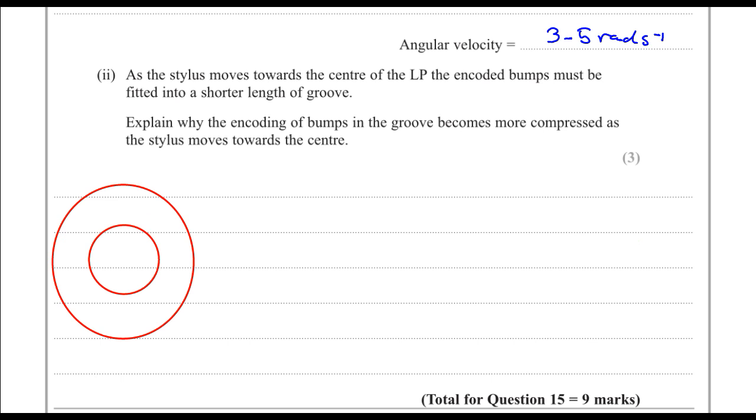We have already found that the angular velocity is 3.5 radians per second, and that angular velocity is constant. So as the stylus moves in, the angular velocity does not change. That also tells us that the period is constant.